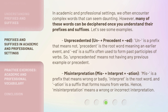In academic and professional settings, we often encounter complex words that can seem daunting. However, many of these words can be deciphered once you understand their prefixes and suffixes. Let's see some examples. 'Unprecedented': un + precedent + ed. 'Un' is a prefix that means 'not.' 'Precedent' is the root word meaning an earlier event. And 'ed' is a suffix often used to form past participles of verbs. So, 'unprecedented' means not having any previous example or precedent.